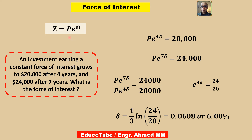Another problem uses the formula z equal to p times e to the power delta t. An investment earning a constant force of interest grows to 20,000 after 4 years and 24,000 after 7 years. Setting up p e to the power 7 delta equal to 24,000 and p e to the power 4 delta equal to 20,000, then dividing, we get e to the power 3 delta equal to 24 over 20. Solving, delta equals one-third times ln of 24 over 20, which gives approximately 0.0608 or 6.08%.